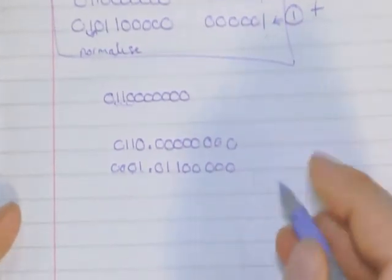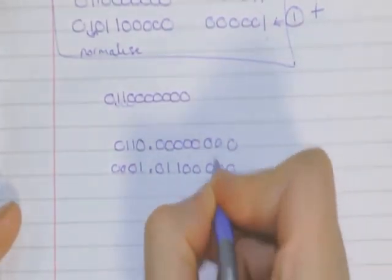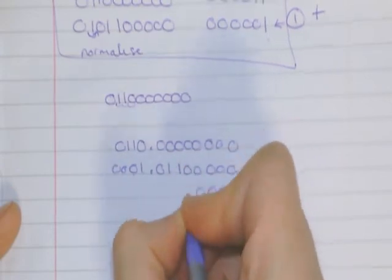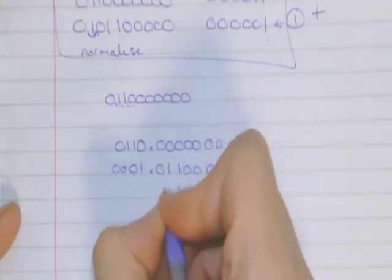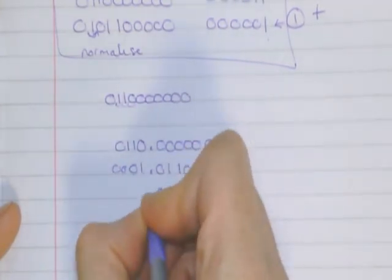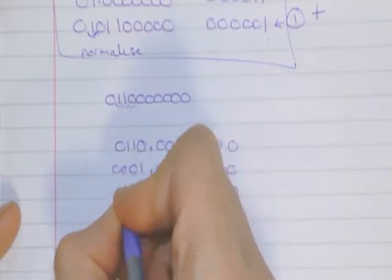So 0 plus 0 is 0, 0, 0, 0, 0, 1, 1, 0, 0, 0, 0, 1, 1, 1, 0.